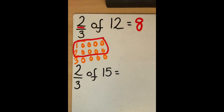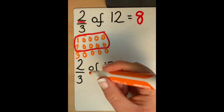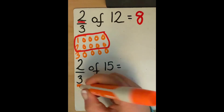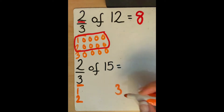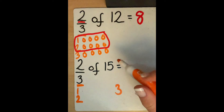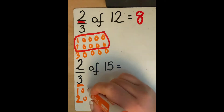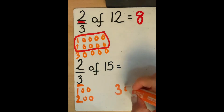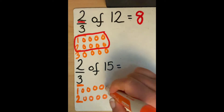Let's have a go at another one. This time I want to find 2 thirds of 15. Again, we are going to look at our denominator first, which tells us we need 3 groups. We need to split 15 equally between those 3 groups, counting out all 15.